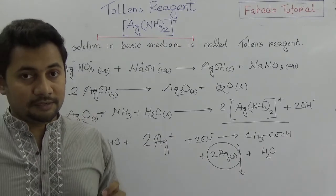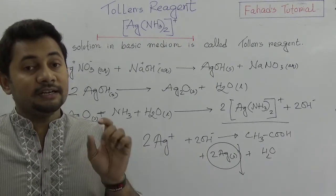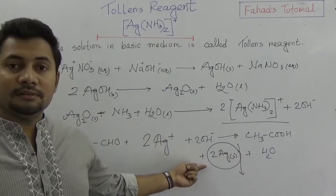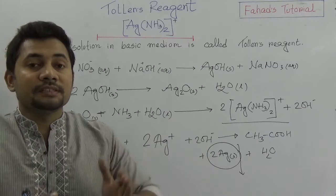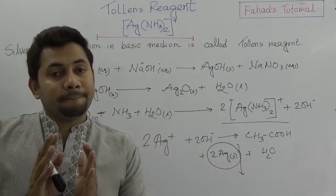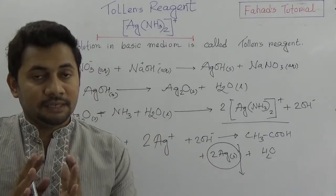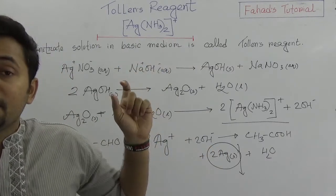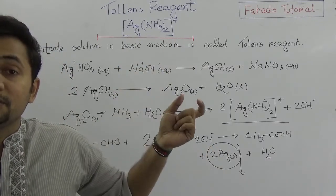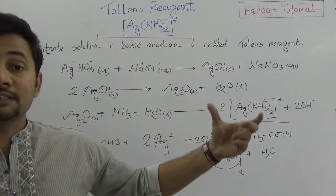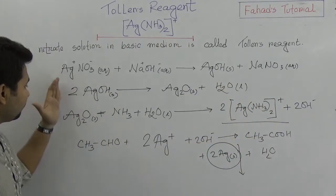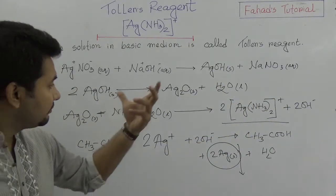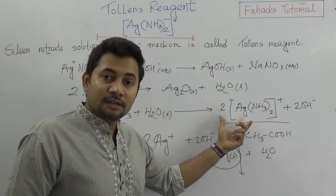So, in organic compounds, to identify the functional group of aldehyde, we use Tollens' reagent. The definition of Tollens' reagent is: the silver nitrate solution in basic medium is known as Tollens' reagent. There are four steps by which we can actually produce the Tollens' reagent.